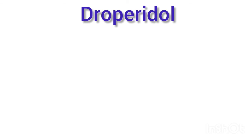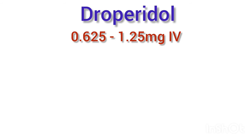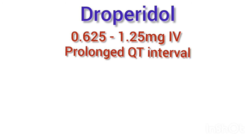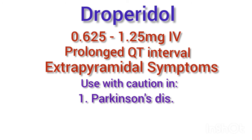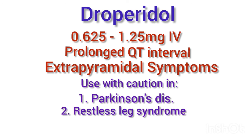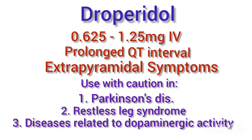Another drug is droperidol, given at a low dose of 0.625 to 1.25 mg intravenous. The problem with droperidol is prolongation of the QT interval and extrapyramidal symptoms, which is seen in all medications involving dopamine receptor blockade. As such, droperidol should be used with caution in patients with Parkinson's disease, restless leg syndrome, or other diseases related to dopaminergic activity.